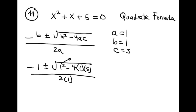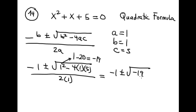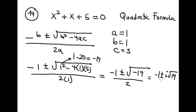Computing the part inside the radical: 1 minus 20 is negative 19. So we have (−1 ± √(−19)) / 2. The square root of a negative number gives i, so this becomes (−1 ± i√19) / 2. Since 19 is a prime number, simplification is impossible.